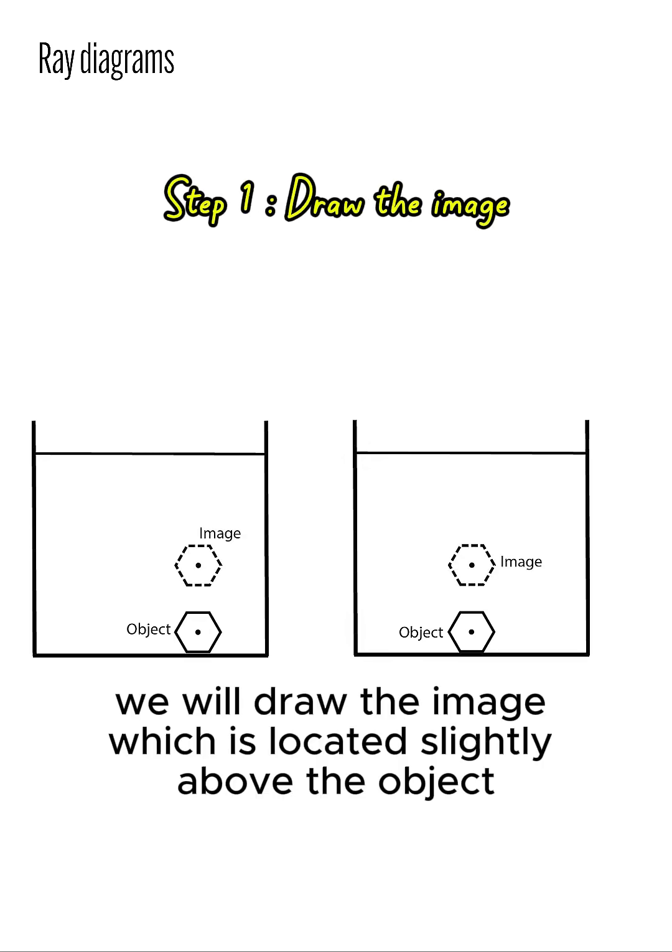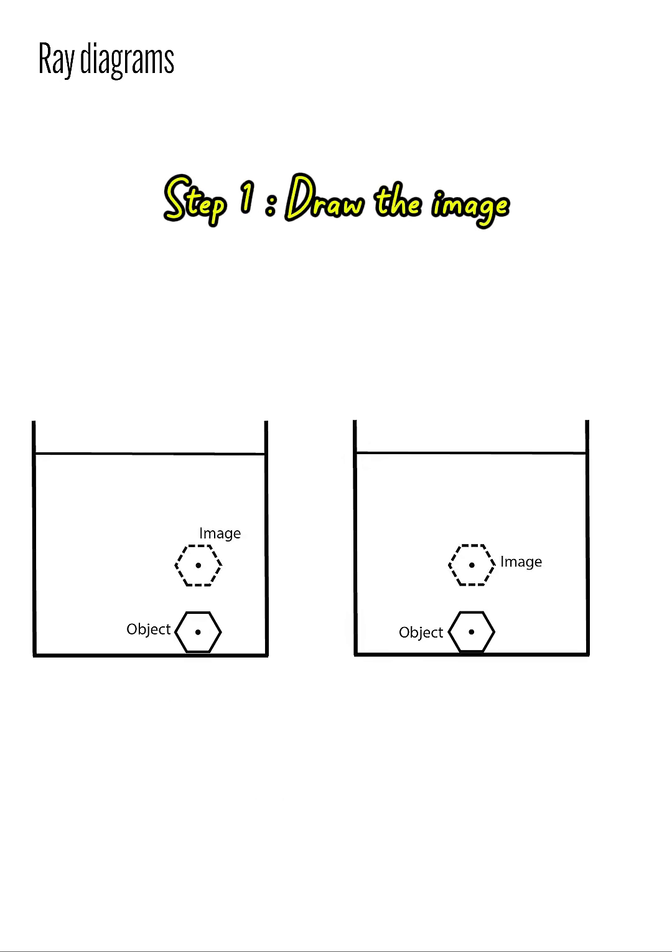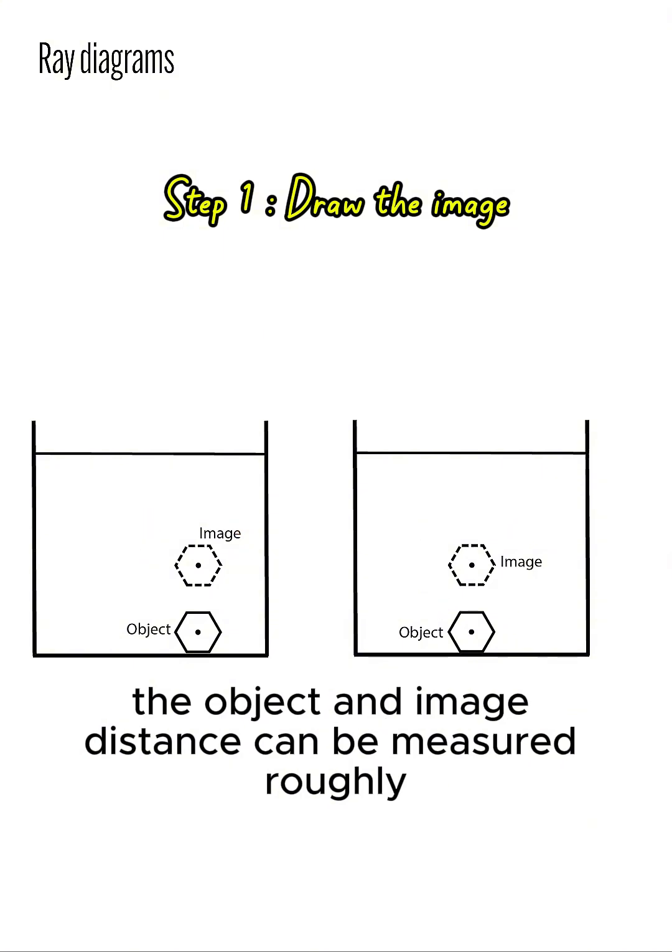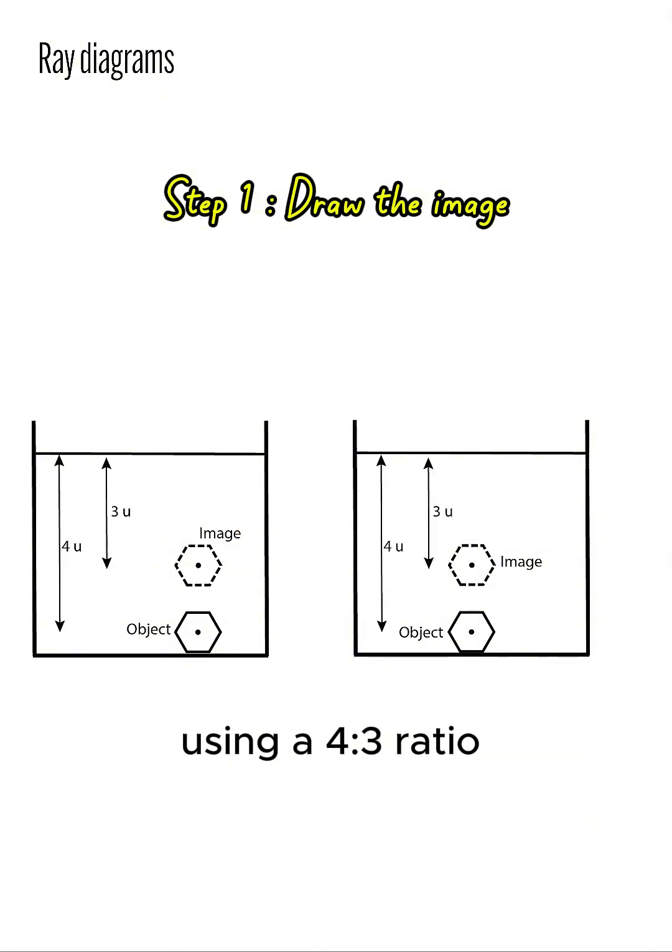First, we will draw the image which is located slightly above the object. Take note that since the image is virtual, we will be drawing it using dotted lines. And when using water as the medium, the object and image distance can be measured roughly using a 4 is to 3 ratio.